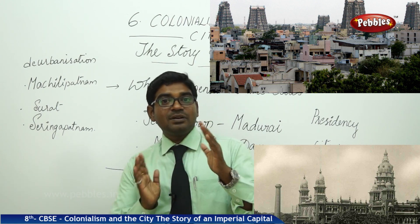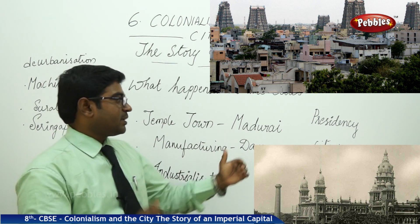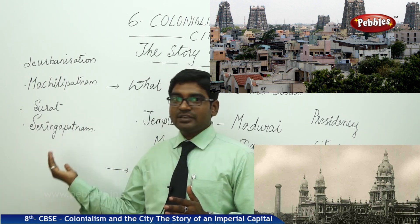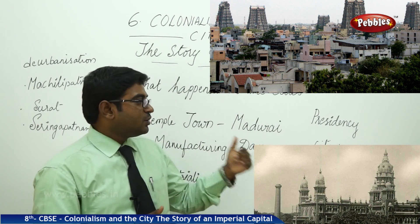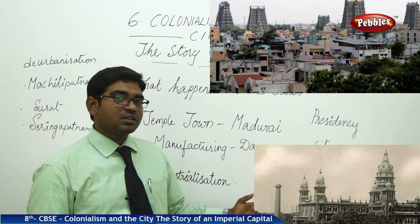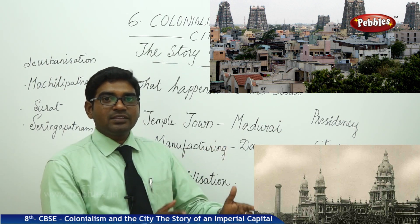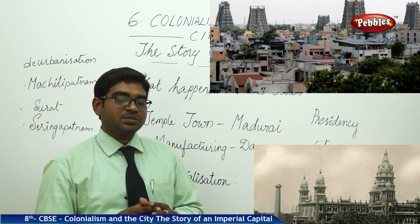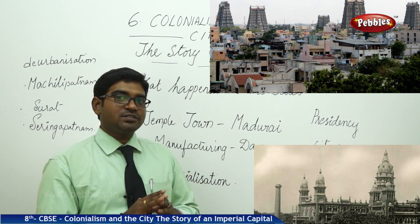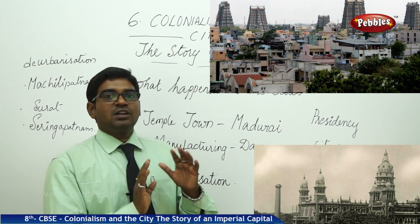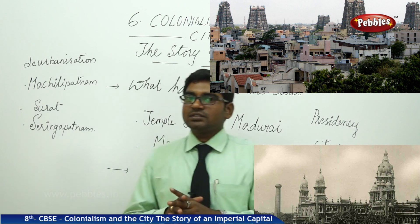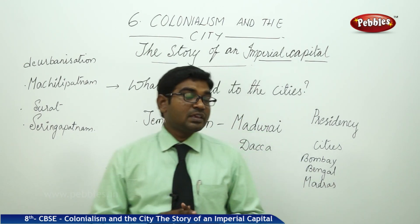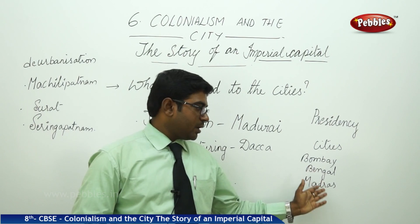But as the new presidency cities — Bombay, Bengal, and Madras — emerged, people started to shift from Machlipatnam, Surat, and Seringapatnam towards these newly emerged cities for various reasons: to get convenient places, or to find administrative job opportunities. So in search of jobs, people began migrating from these older towns to the presidency cities. This led to the de-urbanization of Machlipatnam, Surat, and Seringapatnam, and the urbanization of Bombay, Bengal, and Madras.